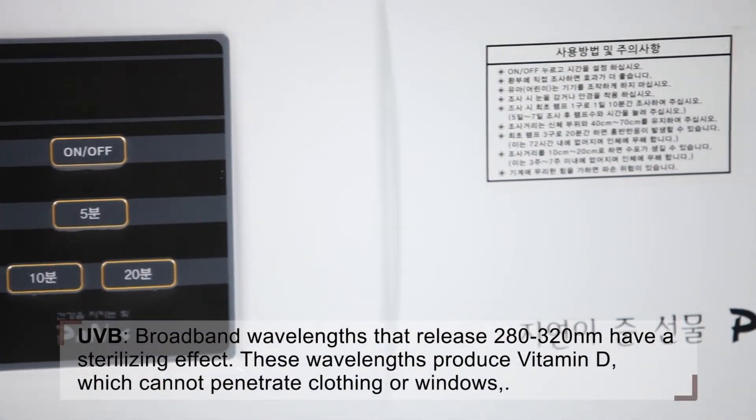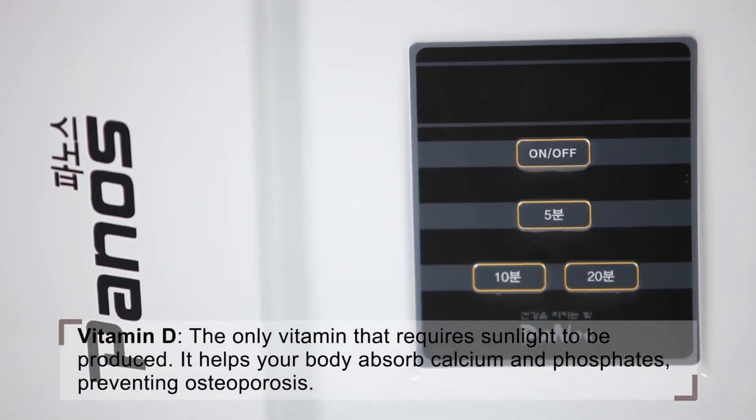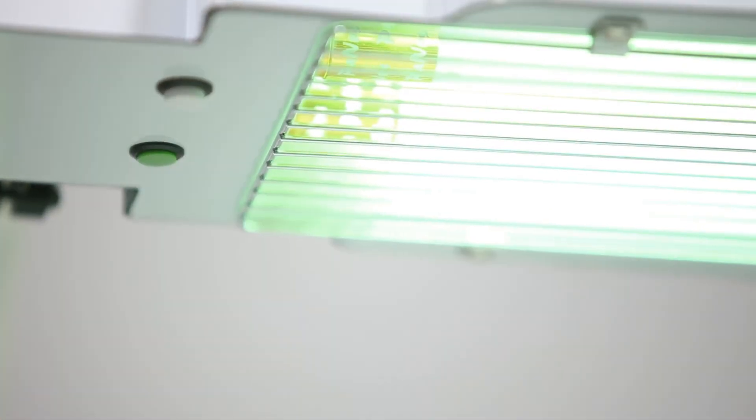UVB rays have a sterilizing effect and help produce vitamin D. It is mainly used for treating skin diseases such as atopic dermatitis, psoriasis, leukoderma, and eczema.